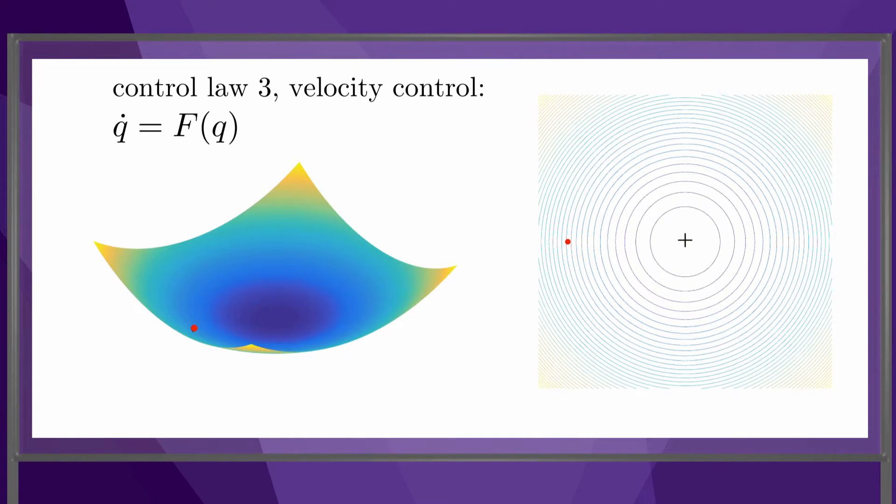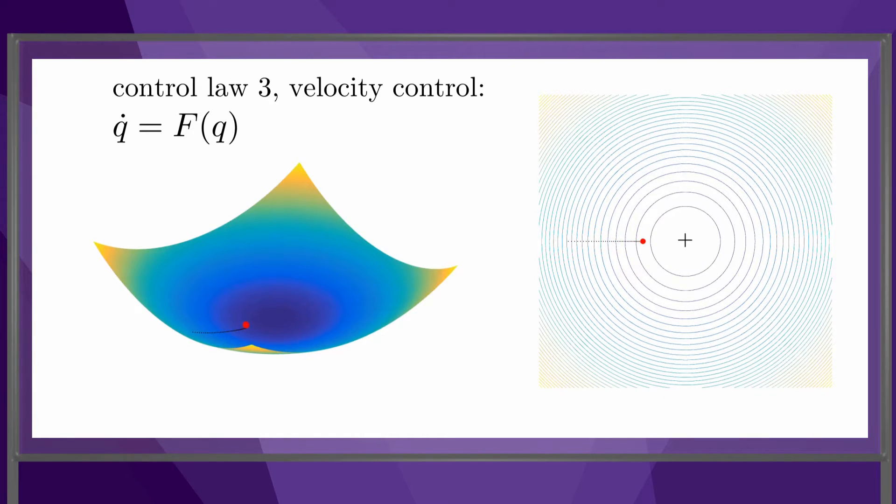Finally, we could use an even simpler control law, where we directly control the robot's velocity to be equal to the force calculated from the potential. Under this control law, the robot moves directly to the goal.